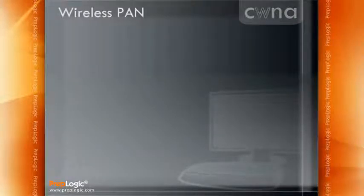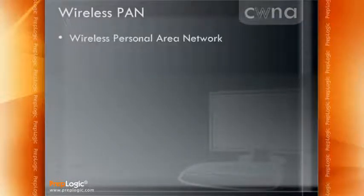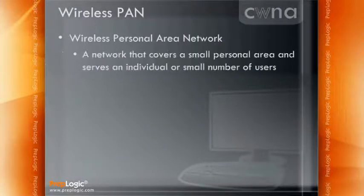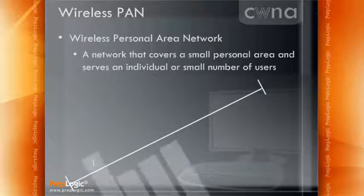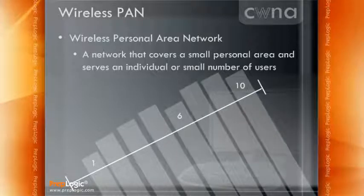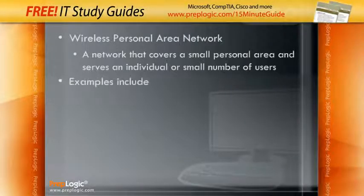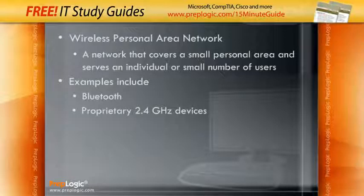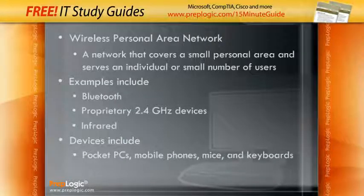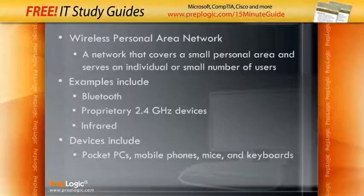The next type of wireless network is a wireless PAN, or wireless personal area network. A wireless personal area network is a network that covers a small personal area and serves an individual or a small number of users. This is something that usually spans only 1 to 6, or maybe 10 feet, and rarely goes beyond that distance because it's intended for very short distance communications. Think of things like Bluetooth devices, proprietary 2.4 GHz devices like some computer mice, or even infrared devices. These devices include pocket PCs, mobile phones, mice, keyboards, headsets, and so forth, and are usually used within just a few feet of the receiver.